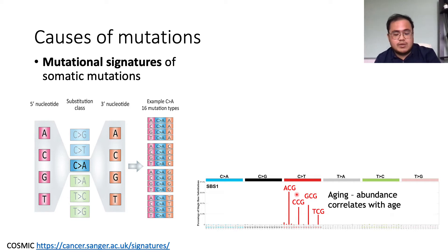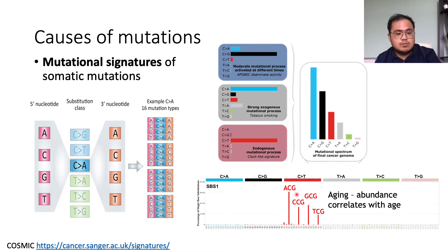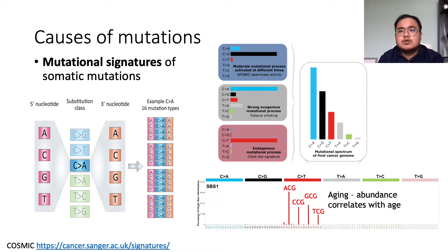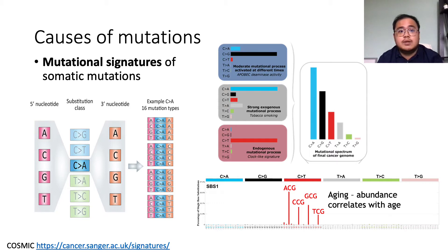Similarly with other signatures, given what we observe from, for example, a tumor, we can break it down into the contribution of different mutational processes. These signatures could therefore be viewed as a tool to understand the causes of different mutational events that you observe in the tumor.